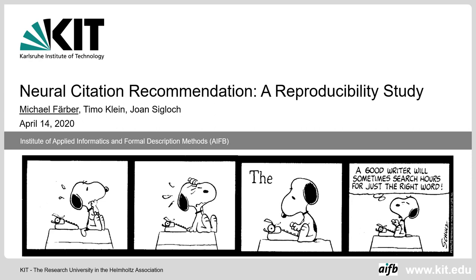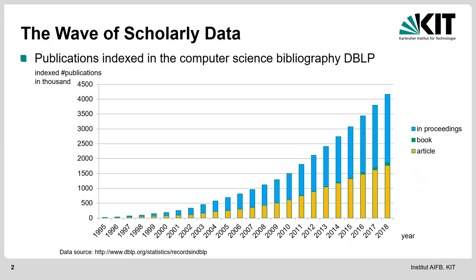I brought a small cartoon today which illustrates quite well that writing text is obviously not so easy. It's actually quite difficult to not only write the text but also to cite the corresponding papers in the case of academia. This is especially the case because there are a lot of papers which you might need to know, read, and cite. Here you can see the number of publications indexed in the computer science bibliography DBLP, and over the years the number of proceedings, books, and articles has increased steadily, not to say exponentially. So it becomes more and more an issue to know all the papers which you should read and cite.